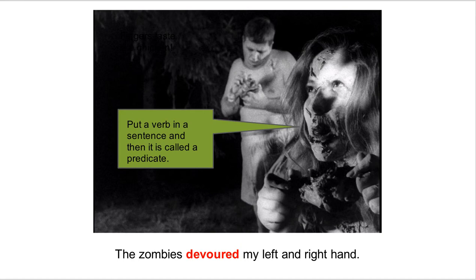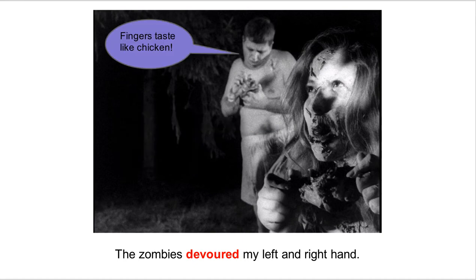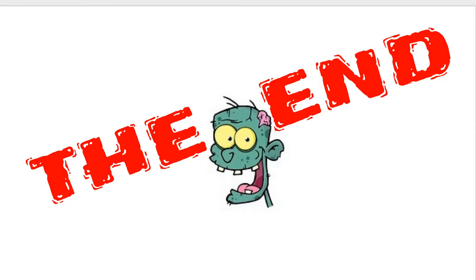What's that, zombie? Put a verb in a sentence and then it's called the predicate. Oh, that seems pretty simple. Thanks, zombie girl. Thank you, zombie kid and his boxers. I did not know that. That's useful.